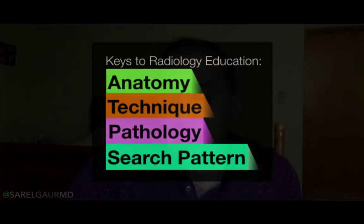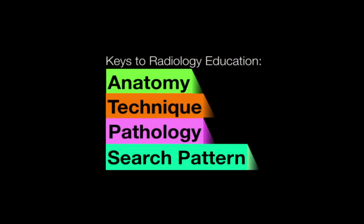Anatomy, technique, pathology, and search pattern. If you know these four things about a radiology study, you'll be able to interpret that study, and over time you'll become an expert. This goes all the way from chest x-rays to an MRI abdomen with contrast, with 30 sequences including diffusion.